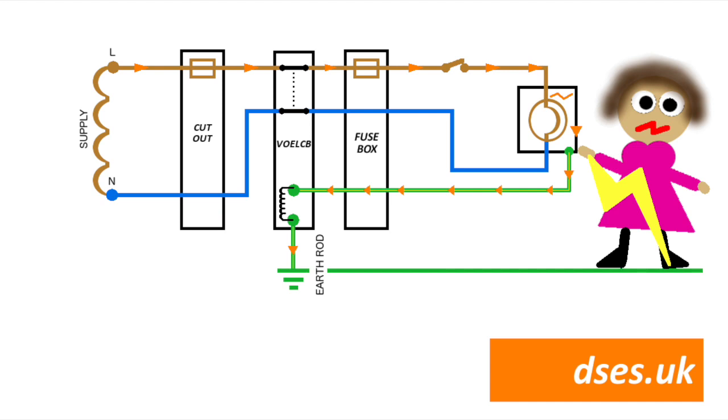In this scenario, we can't actually rely on the voltage operated earth leakage circuit breaker to actuate in a timely enough fashion, if indeed at all. The fault current may be enough to blow the fuse, but that's there to protect the wiring, not poor Doris, who's now got a potential difference right across her. For a safety device that is there to protect you from shock, it's not doing its job.